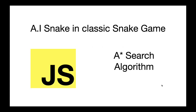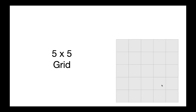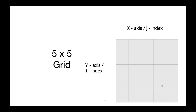A star algorithm is a wonderful algorithm to find the shortest optimal path between 2 points. You can read more about the A star algorithm on Wikipedia. On the canvas, first we need to have a grid to visualize the snake's movement better. Let's say we have a 5x5 grid. Our grid has an X axis which will be the J index on our grid array and a Y axis which will be the I index. The cells on our grid have a width and height of 20 pixels.